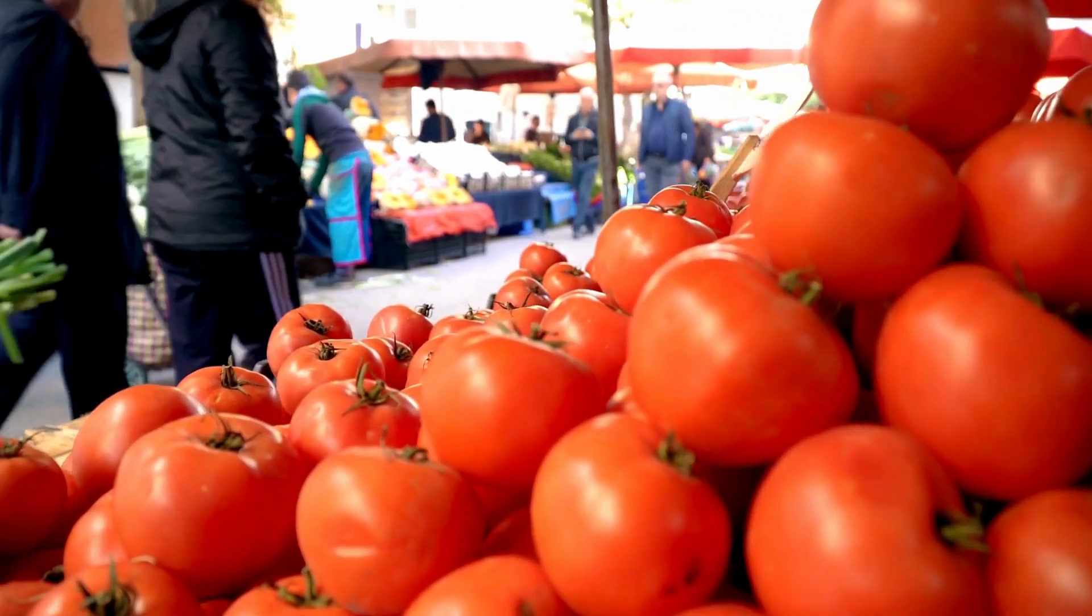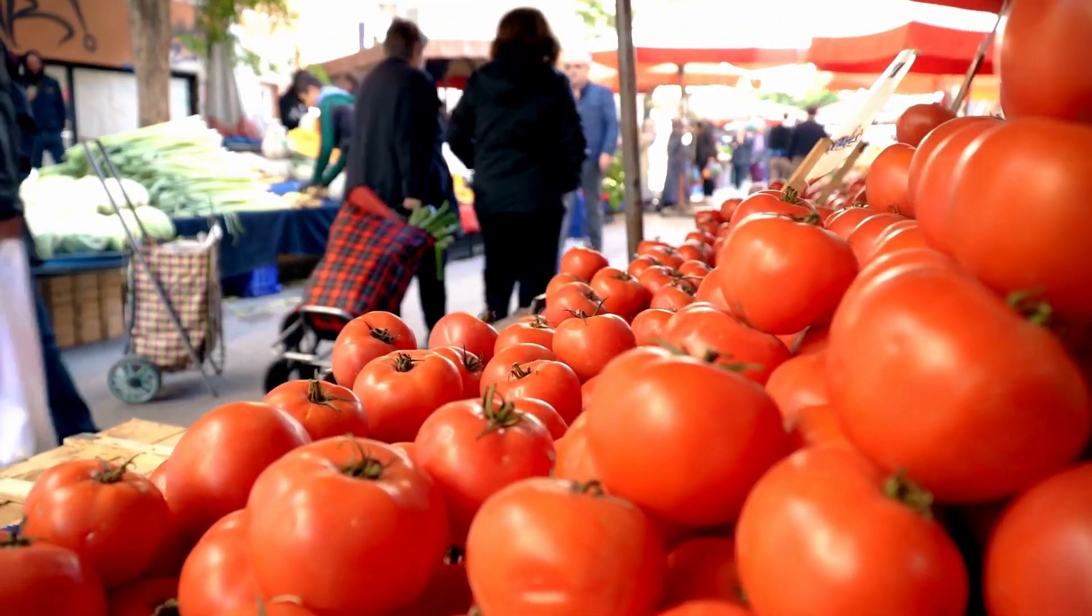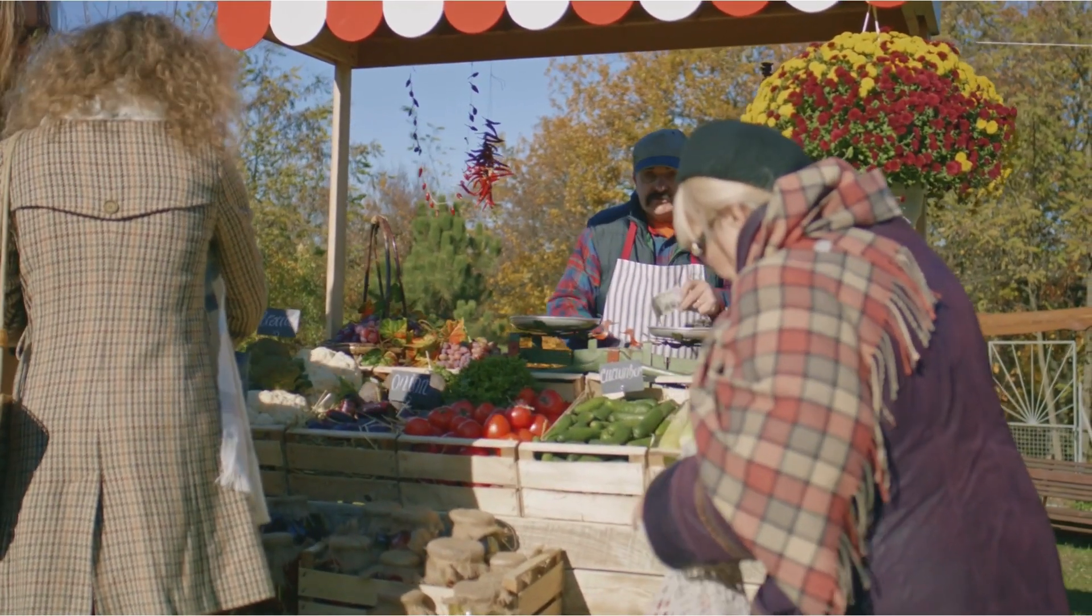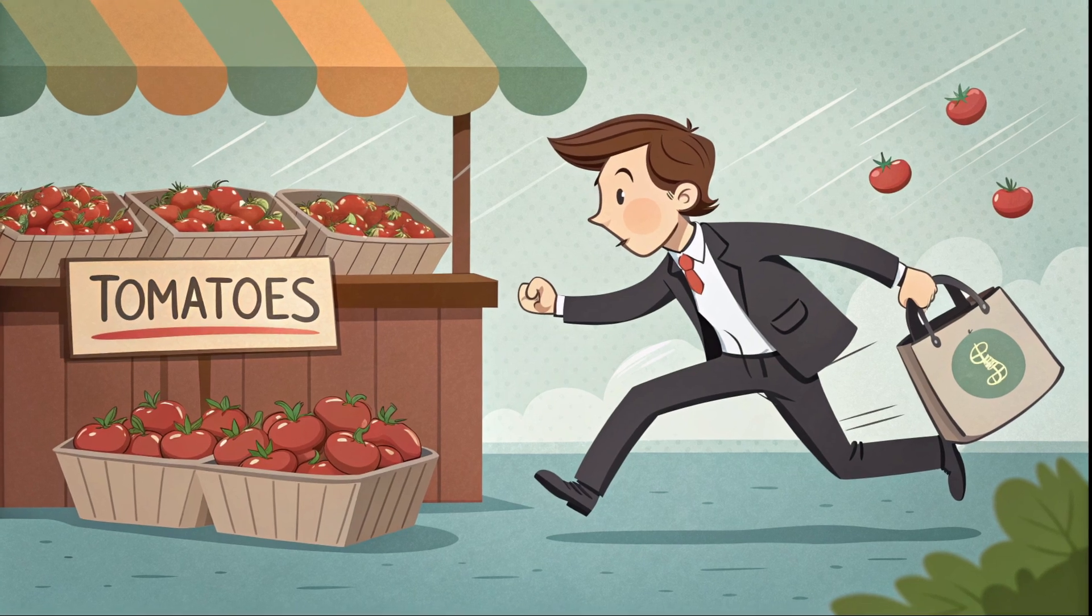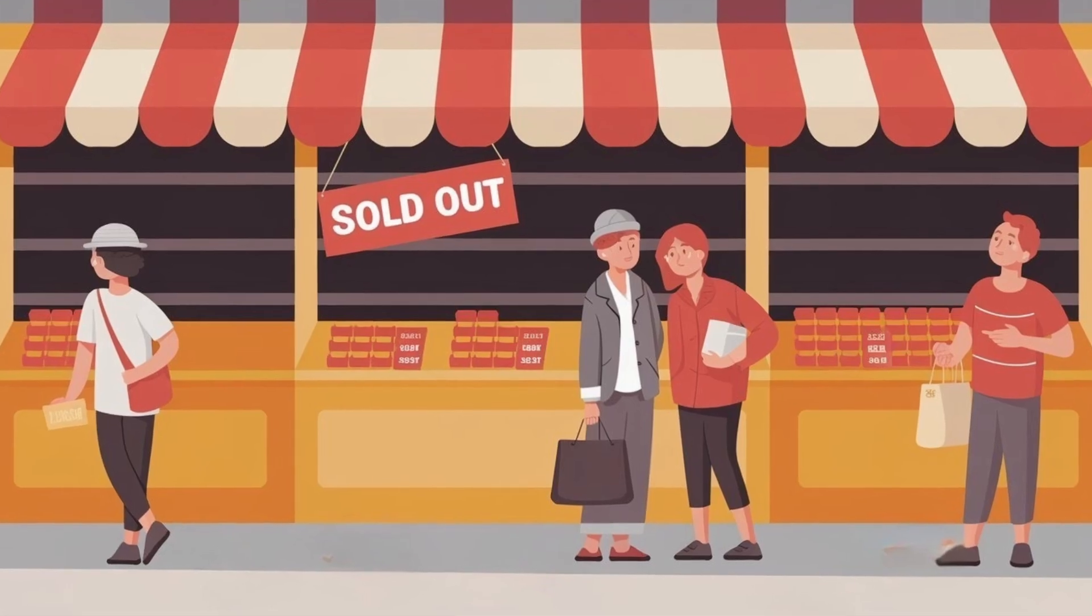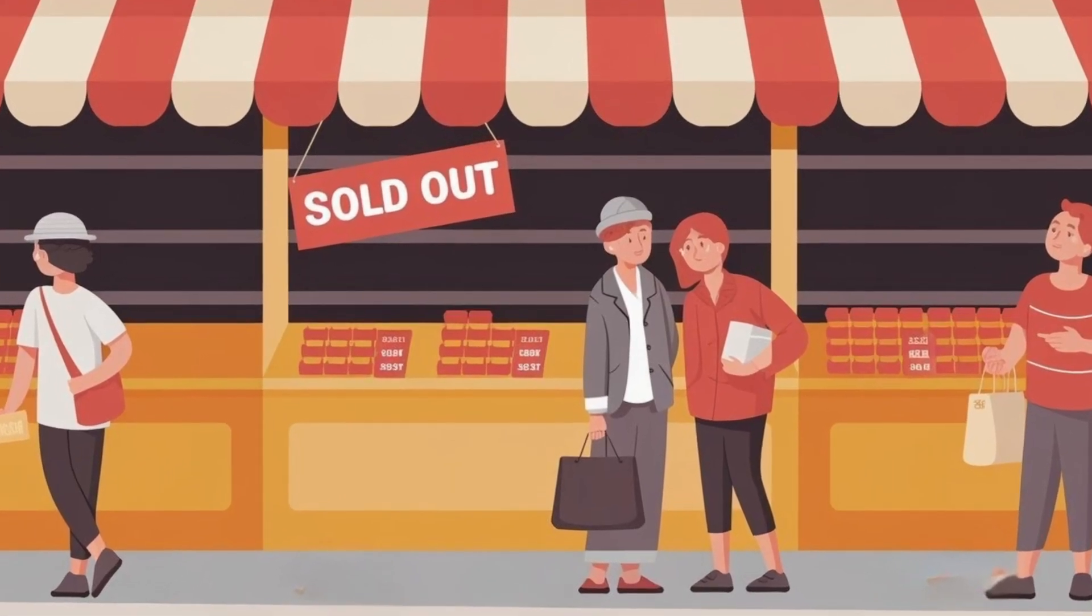Let me break this down into something you can actually wrap your head around. Imagine you're at a farmer's market. You notice someone buying up all the organic tomatoes at one stand. You also know there's another stand at the other end of the market selling the same tomatoes for a dollar more. A human trader might spot this opportunity and try to make a quick buck, but by the time they walk from one end to the other, the opportunity is gone.